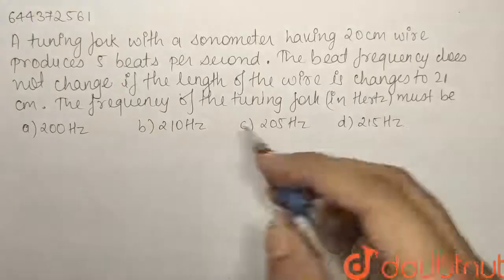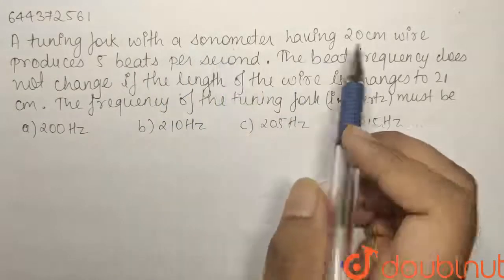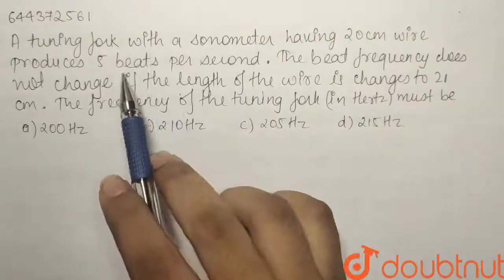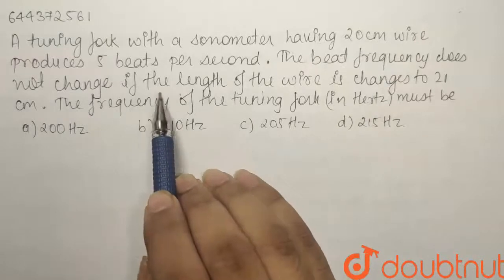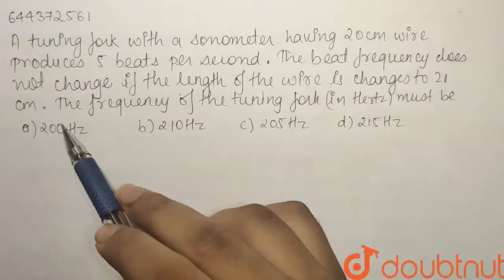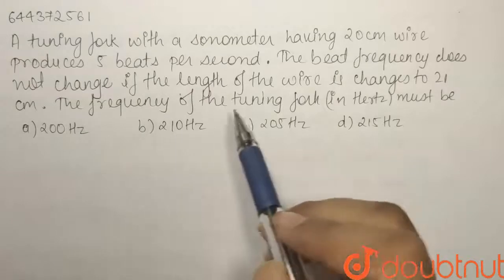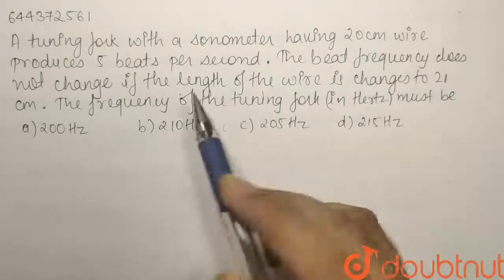Here we have a question from the chapter waves. A tuning fork with a sonometer having 20 centimeter wire produces 5 beats per second. The beat frequency does not change if the length of the wire is changed to 21 centimeter. The frequency of the tuning fork in hertz must be.